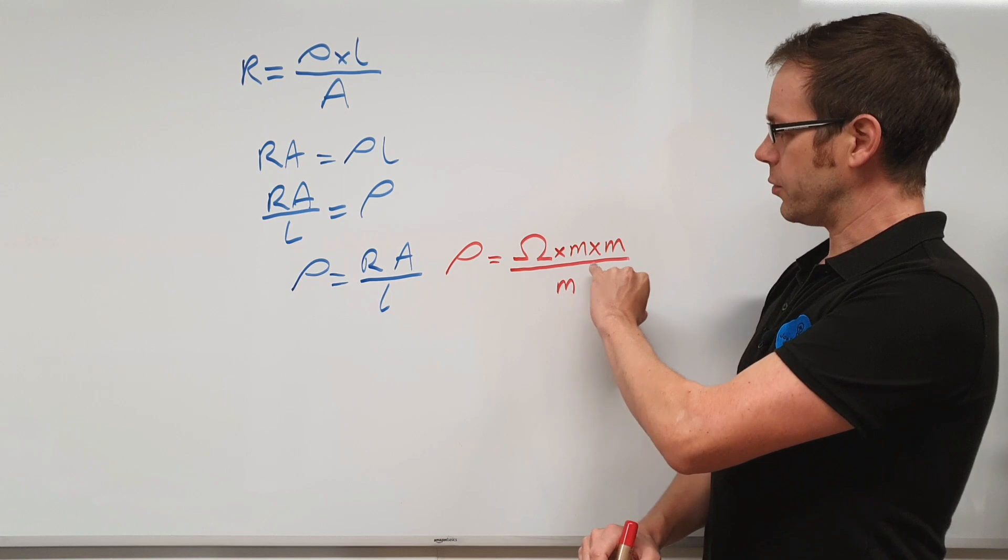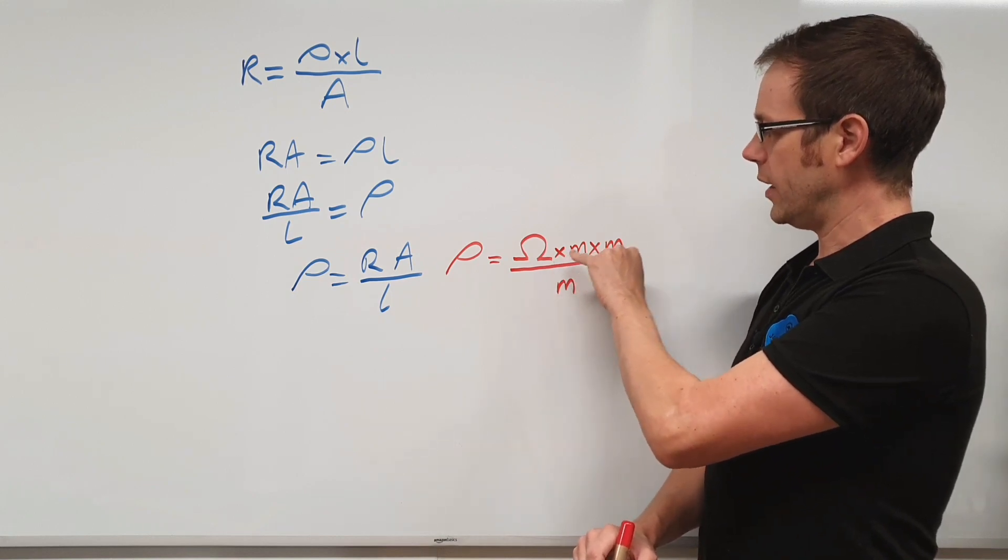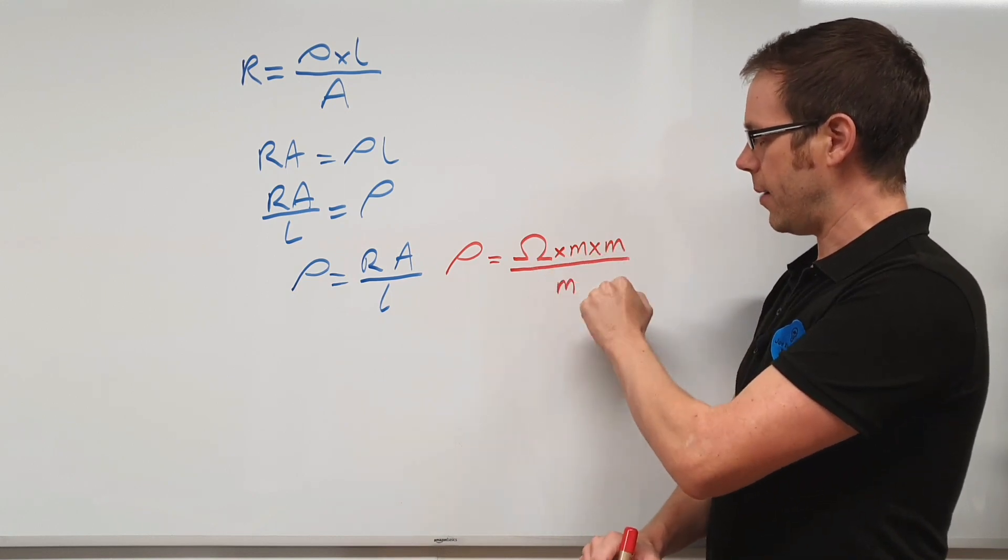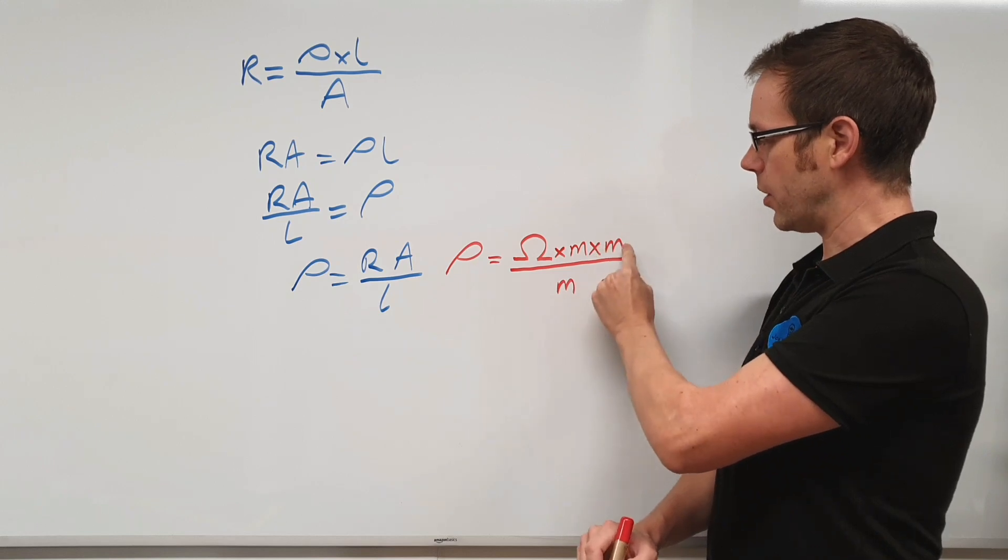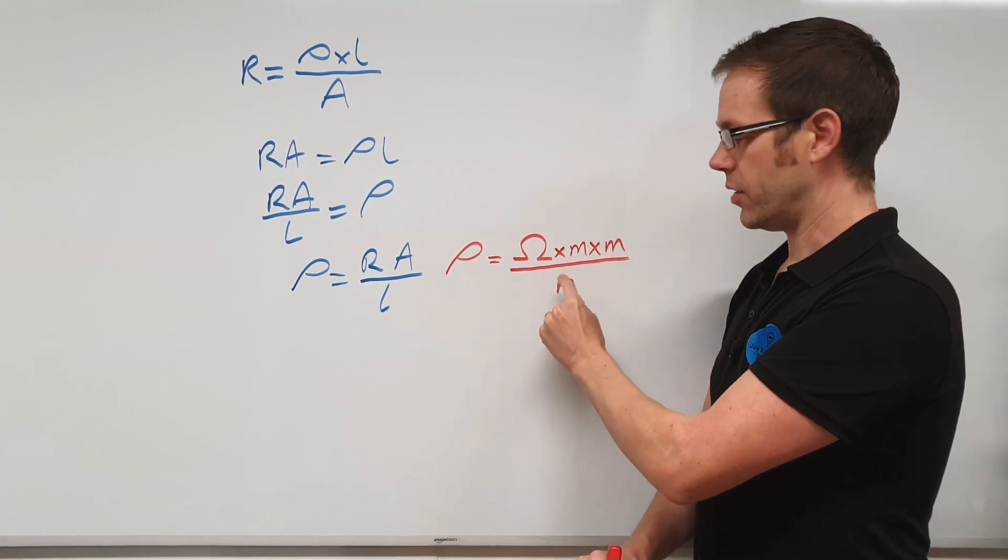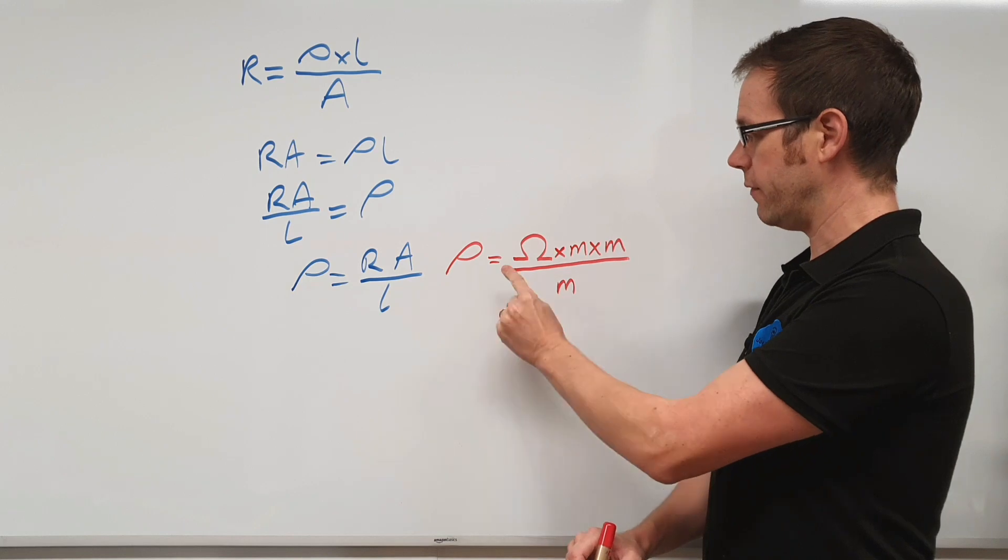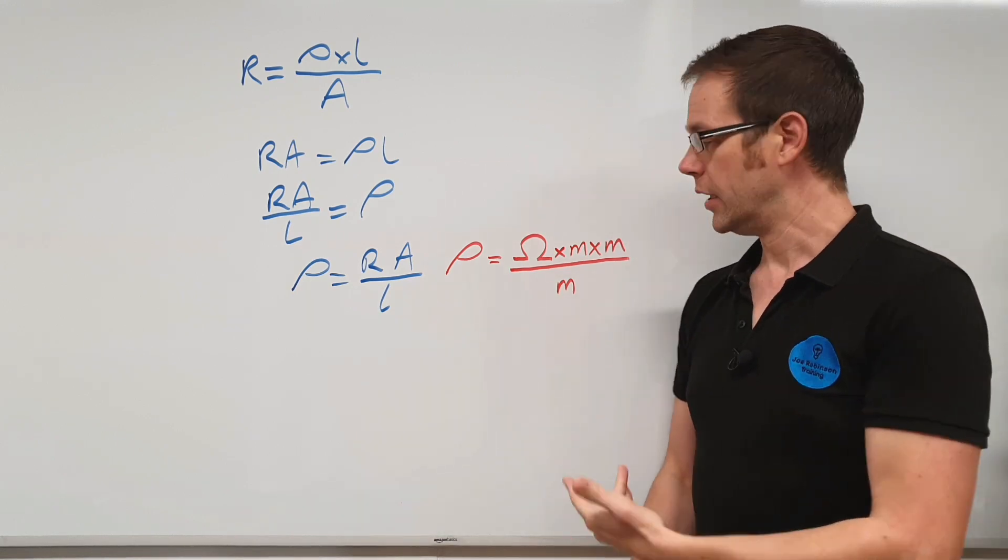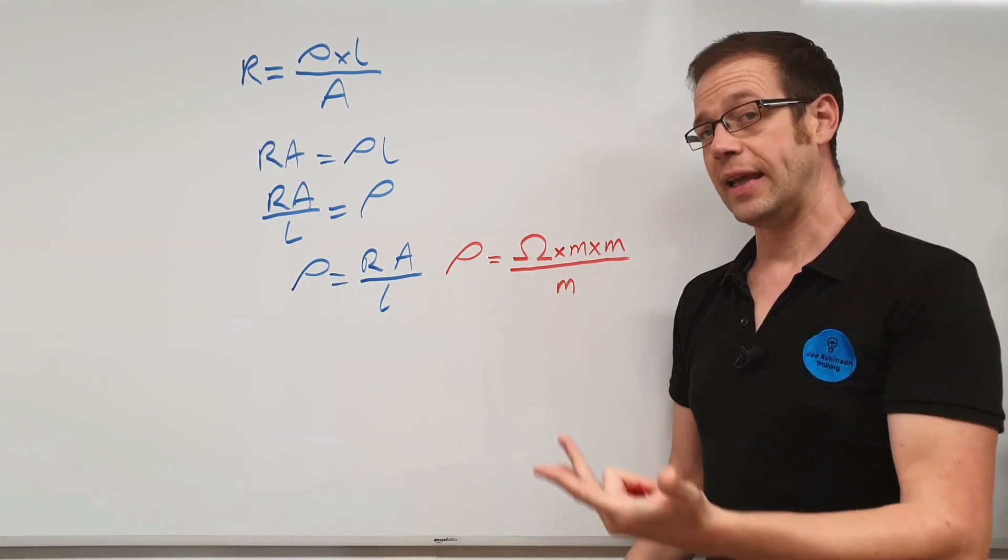Now if you look at what we've got over here, if we break this down, we've got omega times m times m divided by m. So on the end here, we're timesing by m, and then we're dividing by m. So if you times by something and then divide by that same something, it cancels out. It's like it never existed.